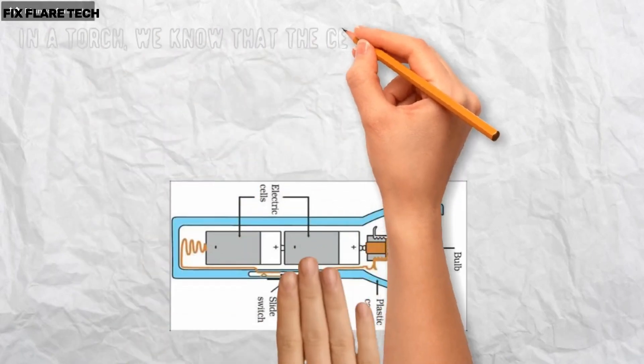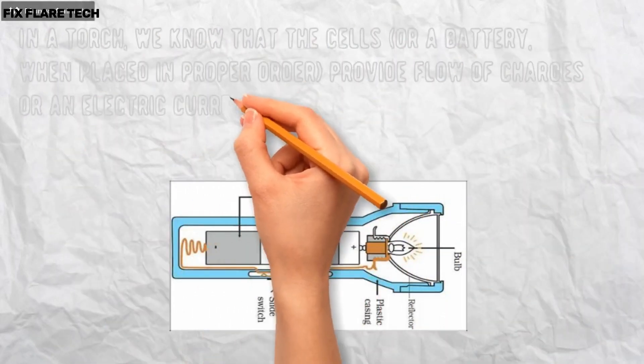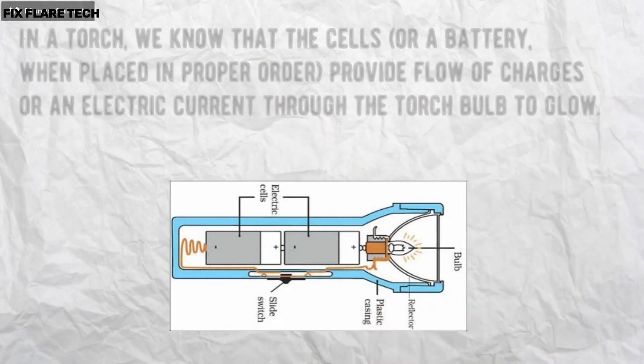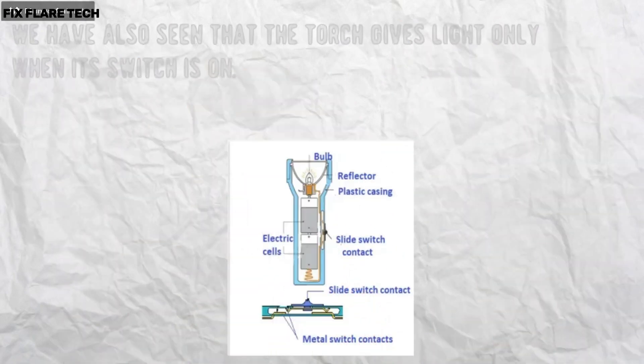In a torch, we know that the cells, or a battery, when placed in proper order, provide flow of charges or an electric current through the torch bulb to glow. We have also seen that the torch gives light only when its switch is on.